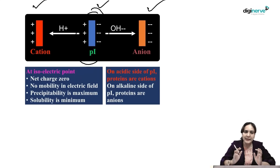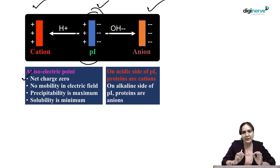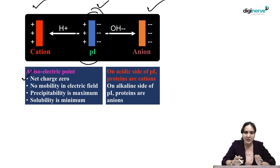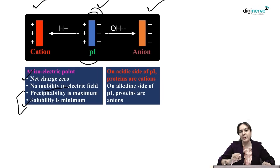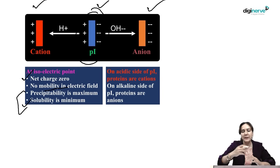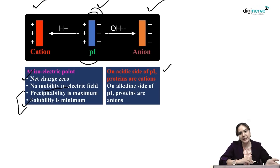At the isoelectric point, the net charge is zero, so there is no mobility in an electric field. In electrophoresis, ions move based on their charge, but if the net charge is zero, there will be no movement. Additionally, solubility is minimum at the isoelectric point, so the amino acid will precipitate. On the acidic side of the isoelectric point they act as cations, and on the basic side they act as anions.